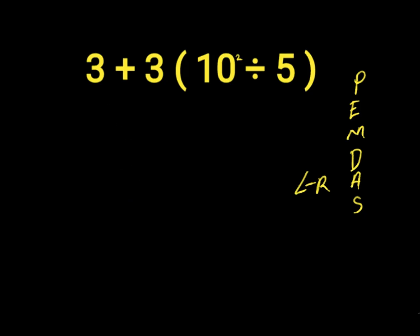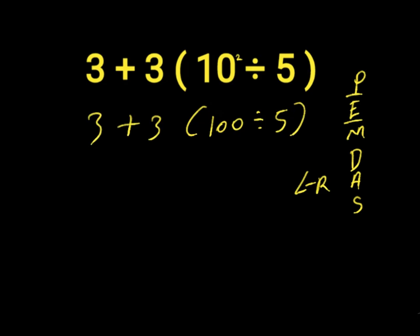Let's find the right answer. First, we start with our parenthesis. Inside the parenthesis we have an exponent, so we do exponents before division. 10 to the power of 2 is 10 times 10, which gives us 100. Then 100 divided by 5, and we bring down the 3 plus 3.